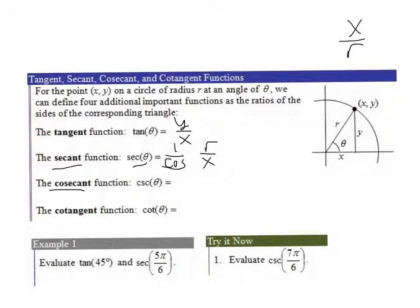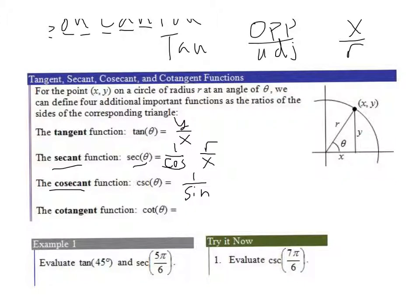The cosecant is reciprocal of the sine, so 1 over sine. Now, one way to remember this is that S always goes with C. If you're looking for the secant, that's reciprocal of the cosine. If you're looking for the cosecant, that's reciprocal of the sine. S goes with C.